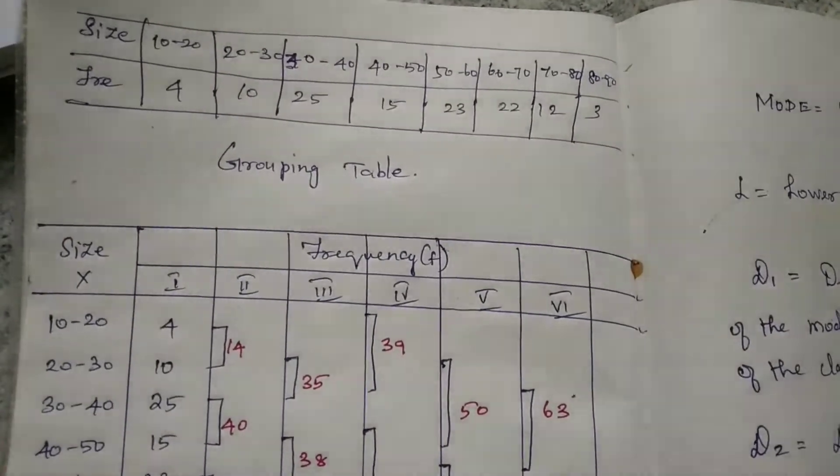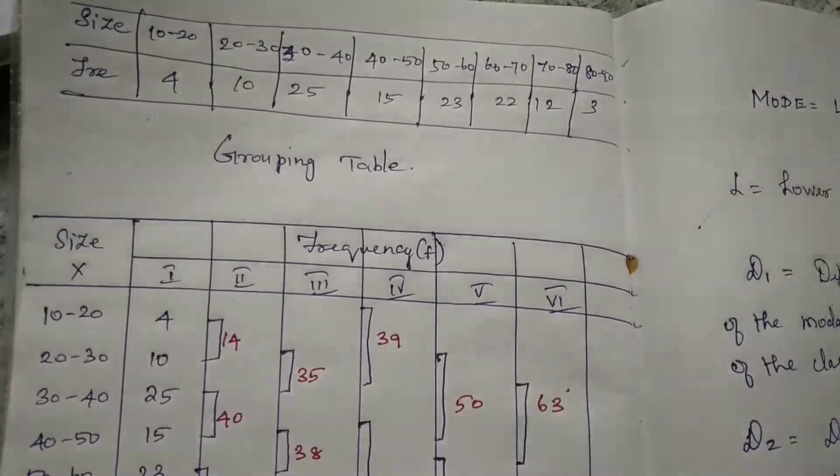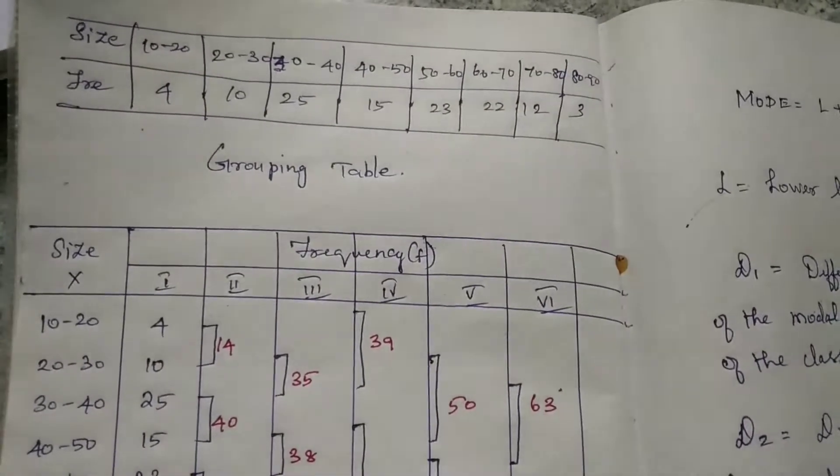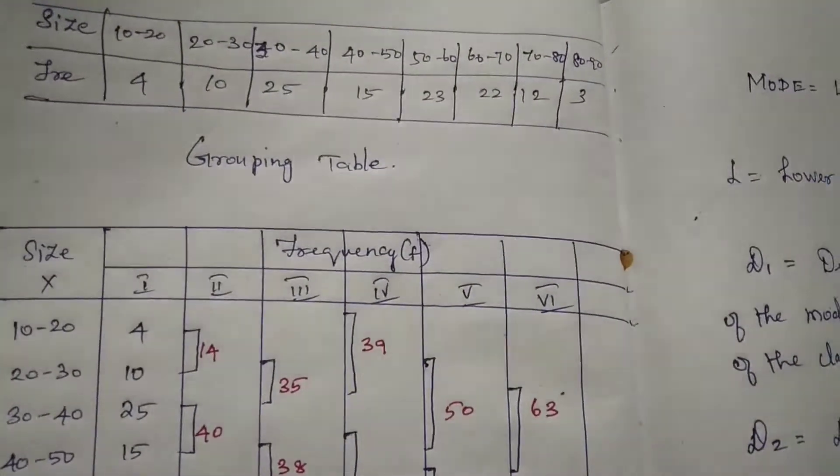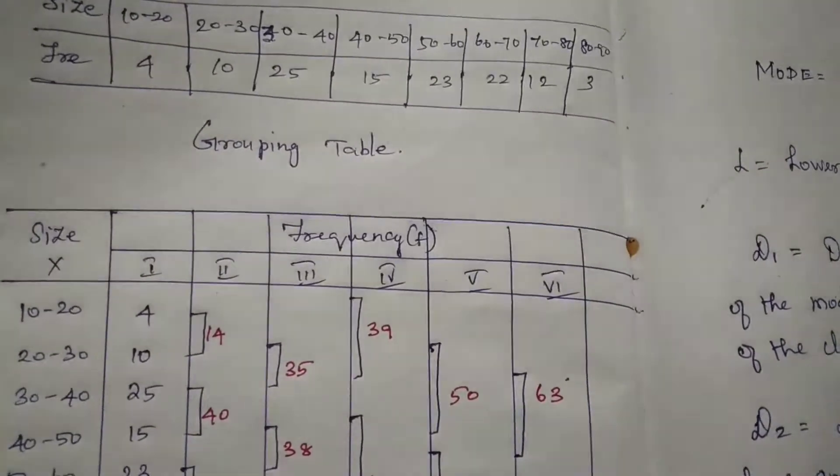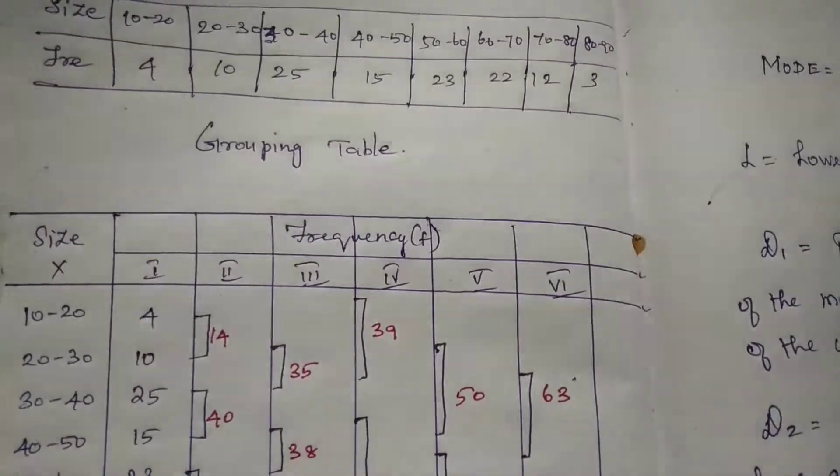By inspection, the modal class is not clear, although the class interval 30 to 40 has the highest frequency of 25. The greatest concentration of items is around class interval 50 to 60, with frequency 23. Now we are going to find the grouping table.